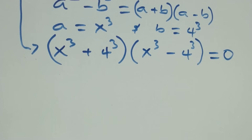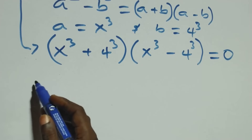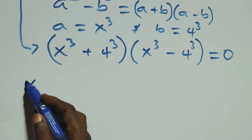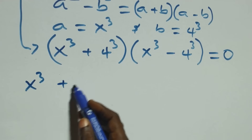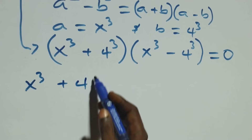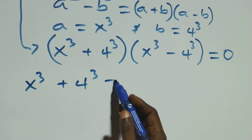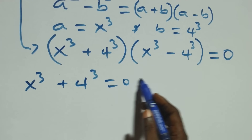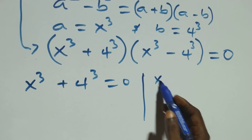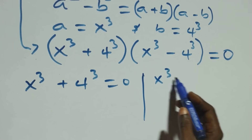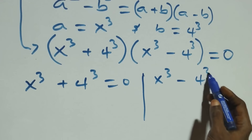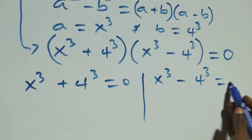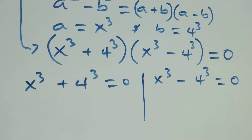The next step gives us two possible cases. The first case: x cubed plus four cubed equals zero. Or the second case: x cubed minus four cubed equals zero.